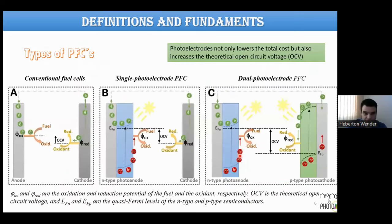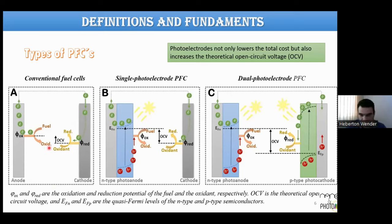In the literature, there are different types of photo fuel cells. A conventional fuel cell uses two metal-based electrodes, offering higher efficiency but also higher cost. The open circuit voltage (OCV) is defined by the difference between the oxidation and reduction reaction potentials. Electrons are taken from the fuel, go to the external circuit, to the cathode, and reduce the oxidant. The device operates spontaneously.